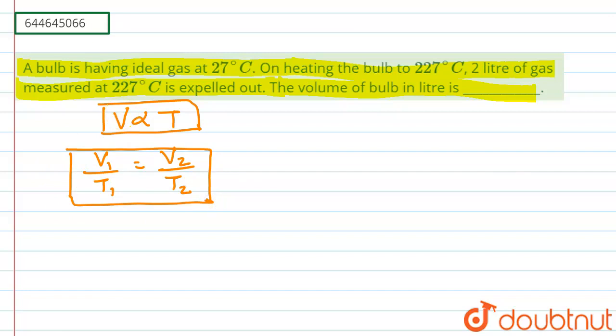Now coming to the quantitative part of the question which states that we have a bulb having ideal gas. So basically if we consider the volume of bulb, that is volume of bulb, let us suppose V, and it is at temperature T1 equals 300 Kelvin. So at 300 Kelvin the volume of bulb is V.